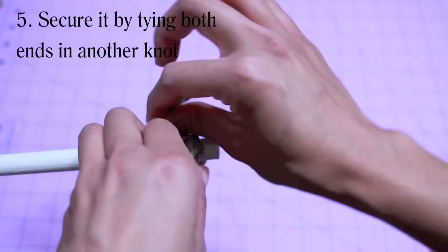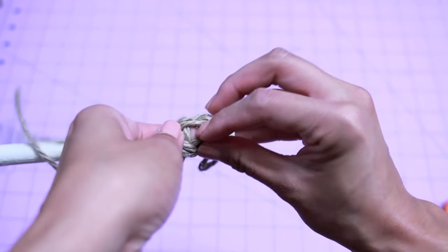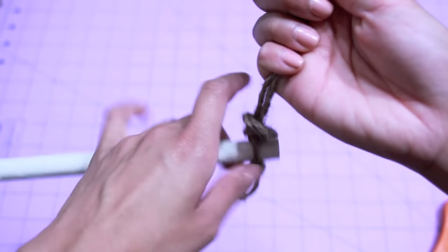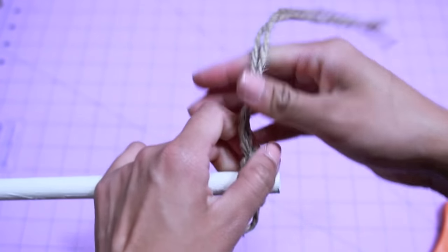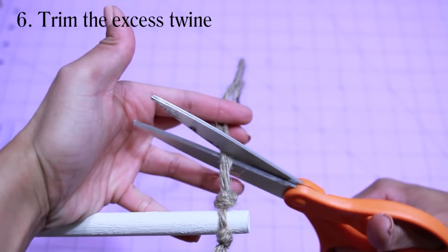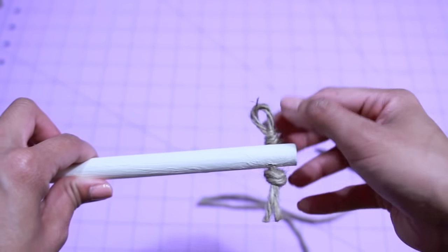And for extra security, tie both ends into a knot. Then just trim the excess twine. Repeat the same steps on the other side of the rod, and now you're ready to hang it on the wall.